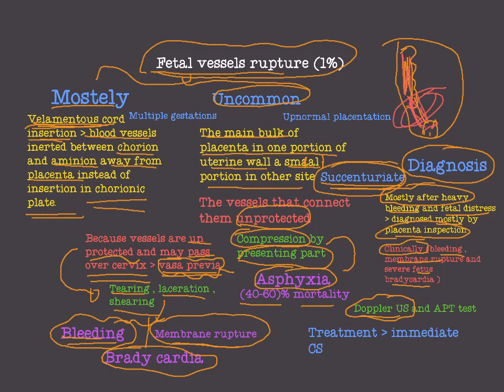The APT test is used to determine whether the blood is fetal or maternal. During bleeding, water and NaOH are added to the blood sample. If it turns pink, it is fetal blood; if it turns yellow to brown, it is the mother's blood.